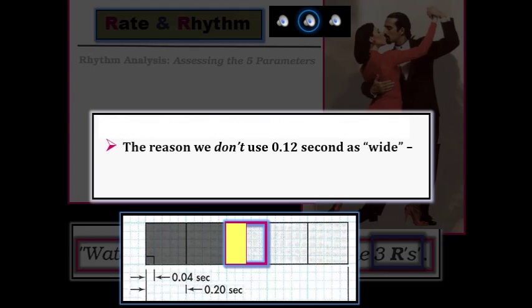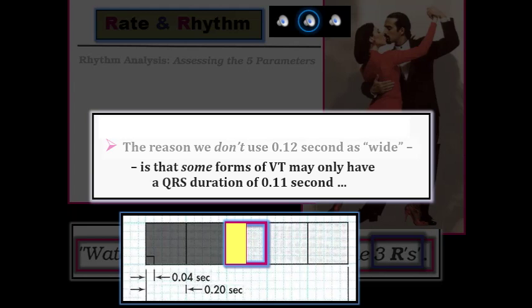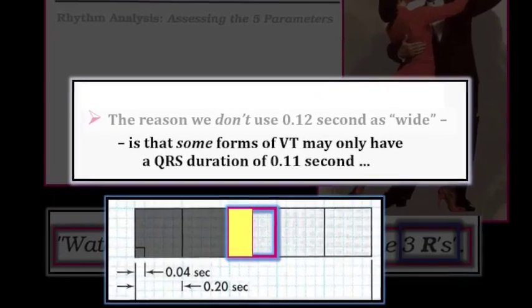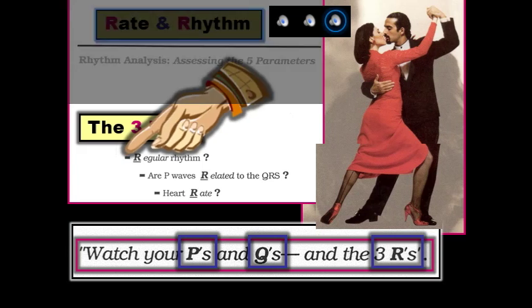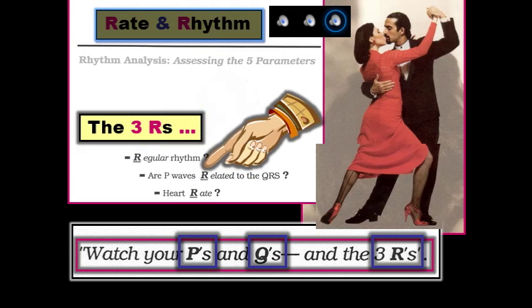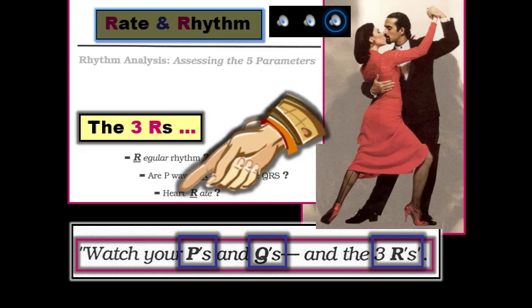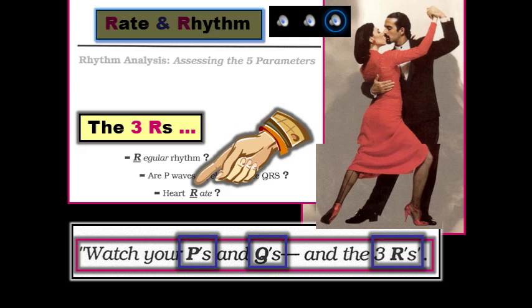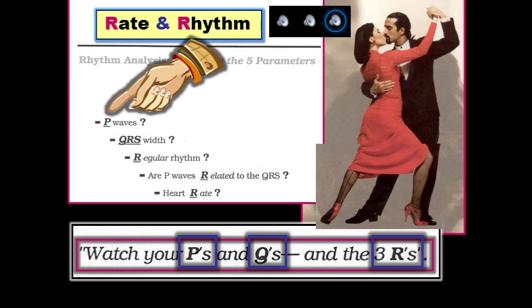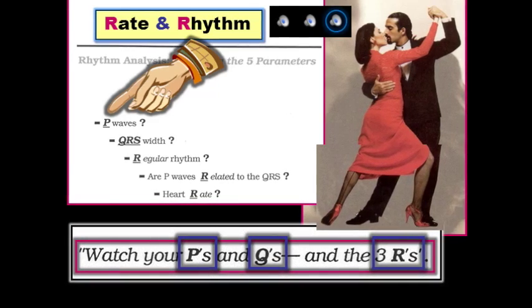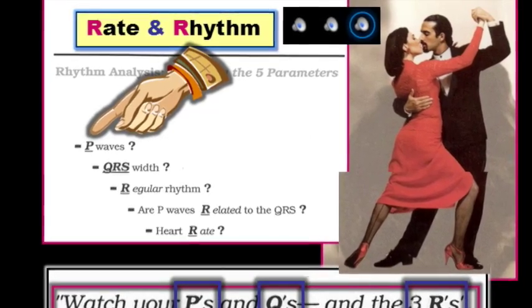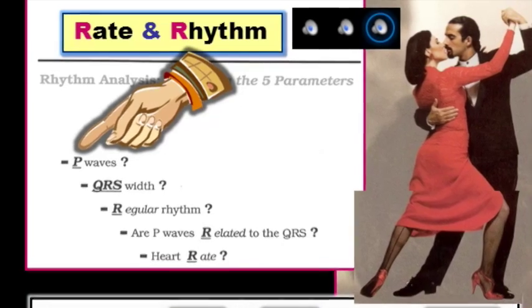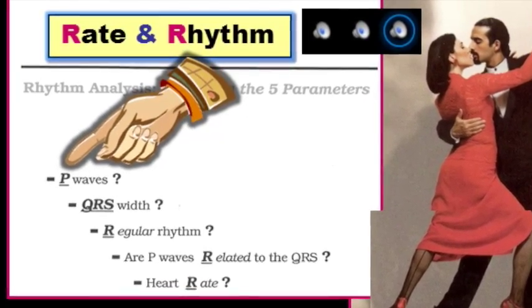The reason we don't use 0.12 seconds as our definition of wide is that some forms of ventricular tachycardia, such as fascicular VT, may only have a QRS duration of 0.11 seconds. The last three parameters are the three R's: is the rhythm regular, are P waves related to a neighboring QRS complex, and what is the rate? It doesn't matter in what sequence you assess the five parameters — all that counts is that you always look for the P's, Q's, and three R's in every rhythm you encounter.